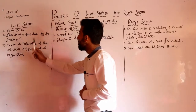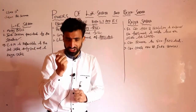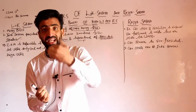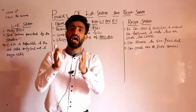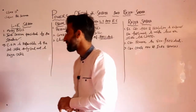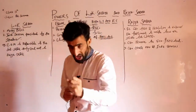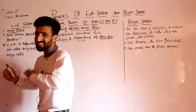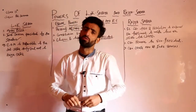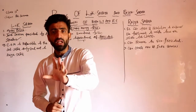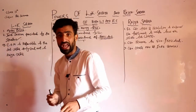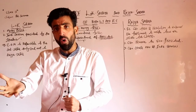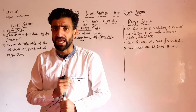Now we will see special powers of Lok Sabha. Some spheres are where the constitution has given special powers to the people's house. As far as the special powers of Lok Sabha are concerned, money bill related - Lok Sabha has exclusive powers. It is the jurisdiction of the Lok Sabha because a money bill can only be introduced in the Lok Sabha.